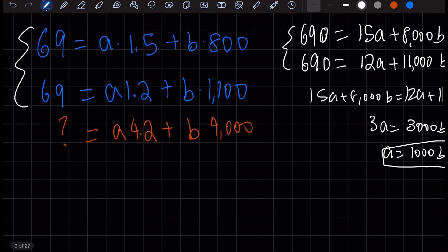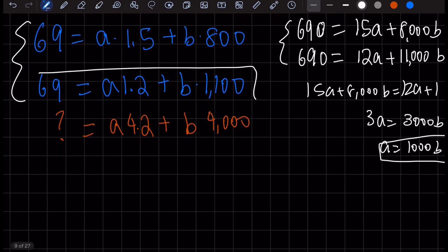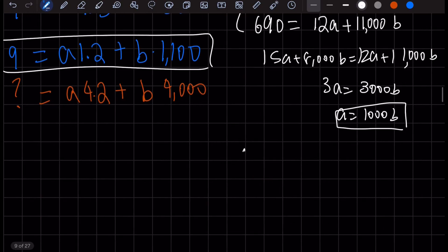So A is 1,000B. I'll just plug it in here and see what we get for B. 69 equals, A is 1,000B, so 1,200B plus 1,100B. This will get us 2,300B equals 69.